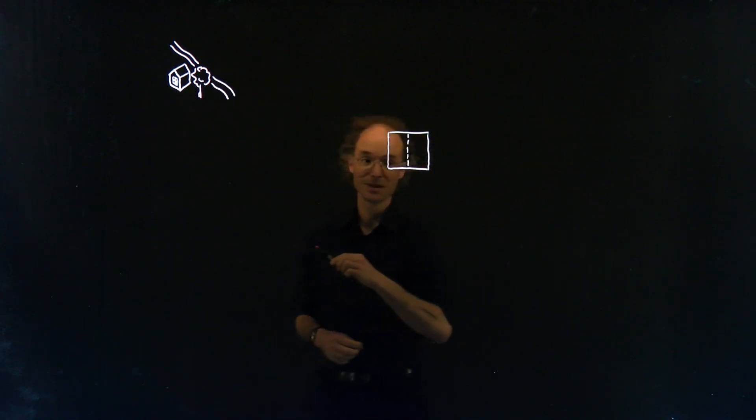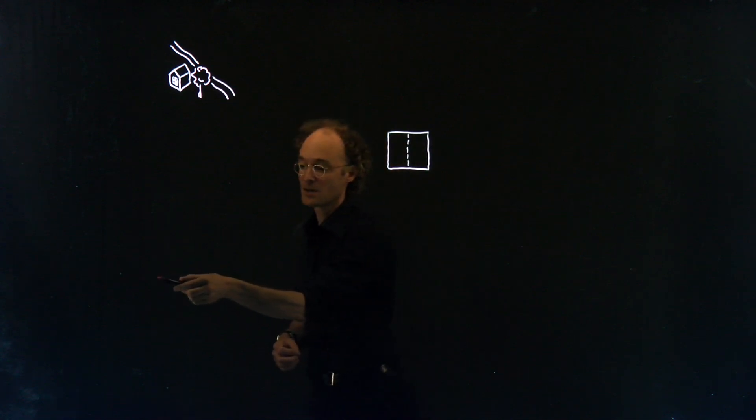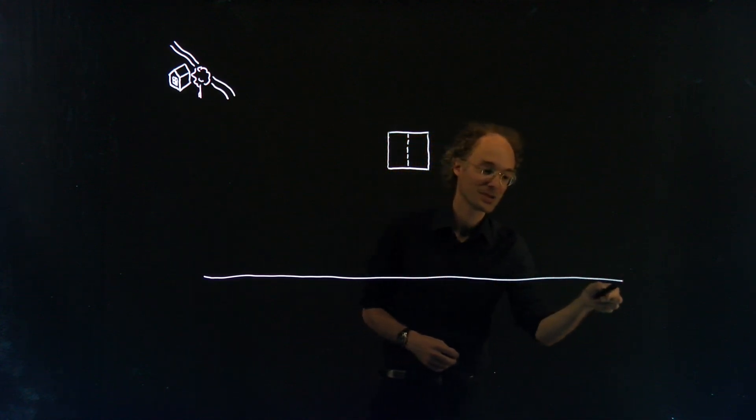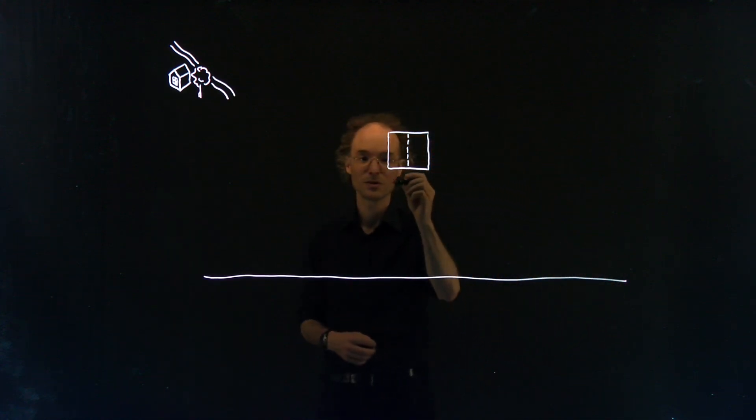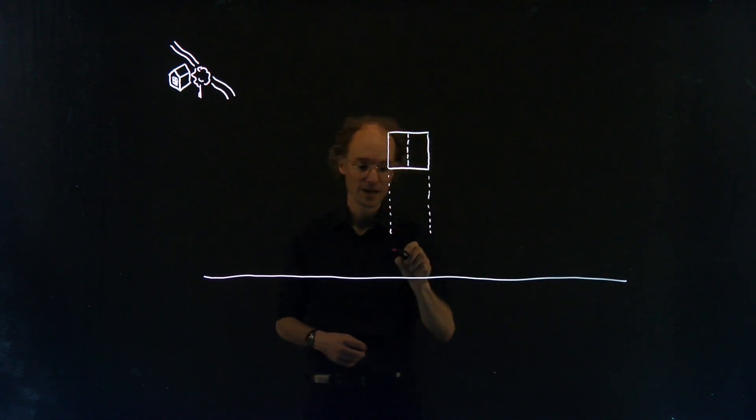The next thing we can do is draw elevations. To do this, perhaps we start with a line for the ground, the level of the ground, and then we can take the measurements of the plan to the elevation.